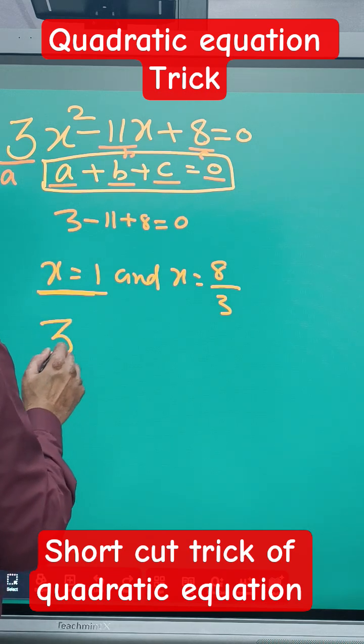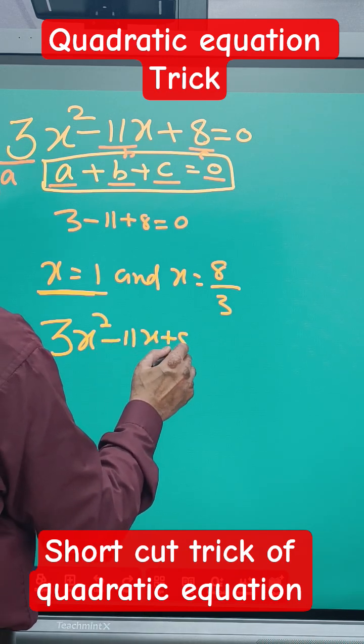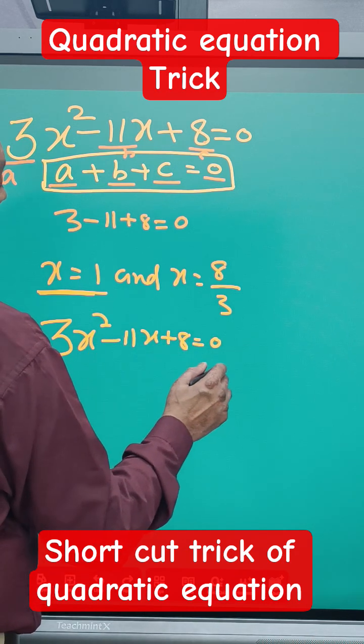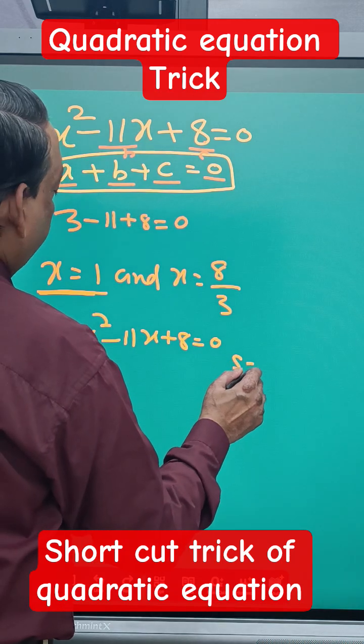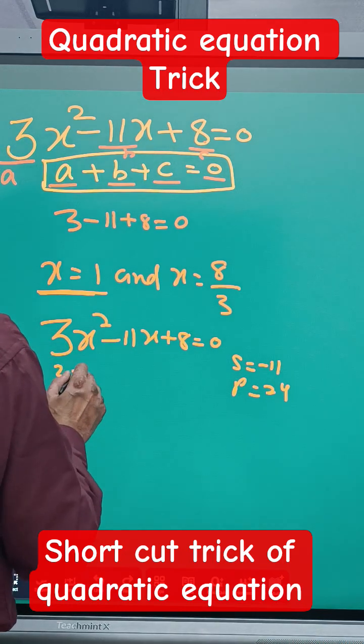Suppose we do it the normal way: 3x² - 11x + 8 = 0. Sum equals -11, product equals 24.